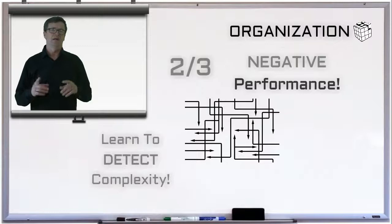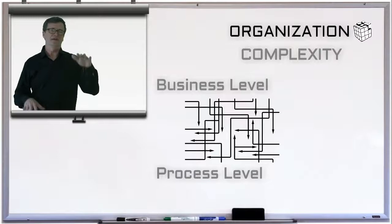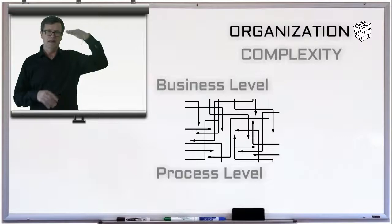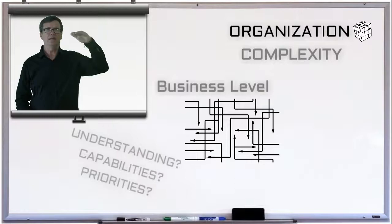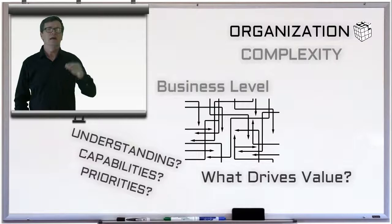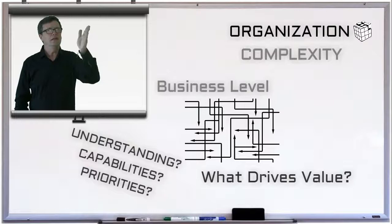So complexity can be investigated at many levels within an organization—for example, the business level or the process level. At the business level, complexity can happen because there's a lack of understanding by management on what drives value in their business. And remember, we discussed the importance of really understanding the value in business in the economics bootcamp.